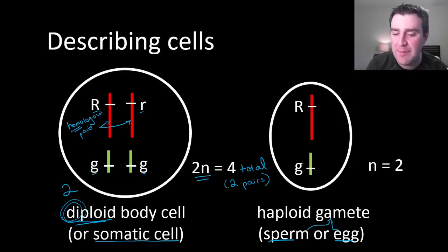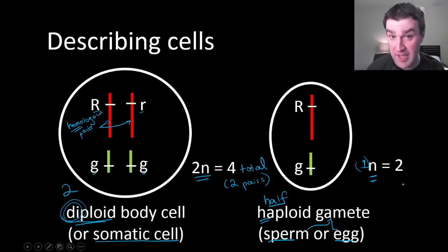All right, and so gametes on the other hand are haploid. Haploid cells have half the number of chromosomes the diploid cells have, or one of each. They don't have pairs. So if the diploid number for this species was four, the haploid number, or just single n, there's kind of an understood one here, is two. Two total chromosomes, no pairs in haploid cells.